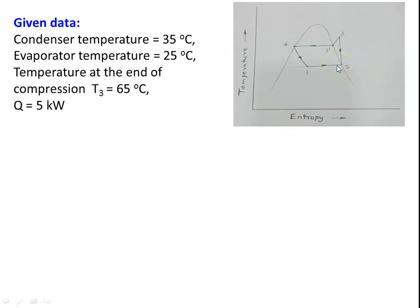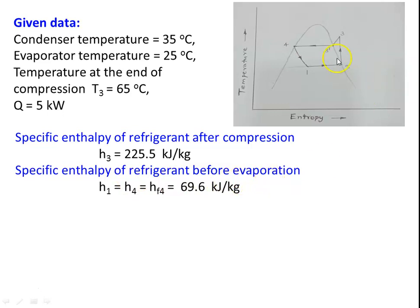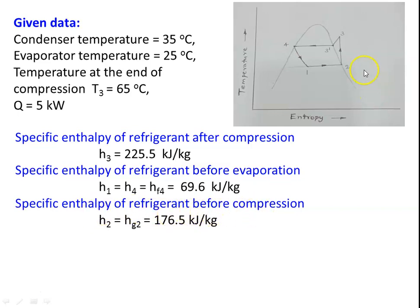The temperature-entropy diagram for this vapor compression cycle shows: at the end of evaporation it is saturated vapor, at the end of compression it is superheated vapor, and at the end of the condenser it is saturated liquid. Taking the properties: specific enthalpy of the refrigerant after compression H3 is 225.5 kJ/kg as given. Specific enthalpy before evaporation H1 equals H4, which is saturated liquid at condenser temperature 35 degrees Celsius — H4 is 69.6 kJ/kg. Specific enthalpy before compression H2 equals HG2, which is saturated vapor — 176.5 kJ/kg, as given in the table.